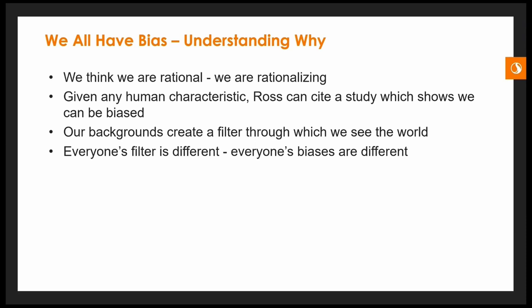Because of the fast brain working so quickly, we think we're rational but in reality our fast brain is making us rationalize. We may be in a situation and think we're making clear decisions, but in reality we're rationalizing and might not be making the decision we would make with our slow brain. Ross states that given any human characteristic, he can show that we can be biased. He explains that our backgrounds create a filter through which we see the world, and because everyone's background is different, everyone's biases are different.